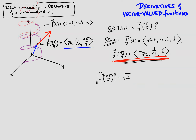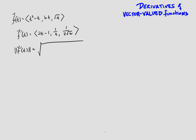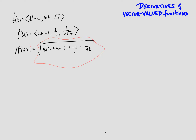Constant speed is not the usual thing for an arbitrary vector-valued function. Most functions we'd write down at random would not give constant speed. For example, if we make up a different function and take its derivative component by component, we get a velocity vector whose squared length is 4t² - 4t + 1 + 1/t² + 1/(4t), which clearly is not constant — very different speeds for different values of t.